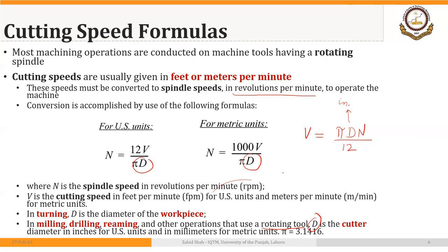The same formula applies for metric units, but the diameter of the workpiece or cutter is generally in millimeters, so we divide by 1000 to get the cutting speed in meters per minute. Conceptually, the formula is simply V = πDN, rearranged to solve for N so we can convert the recommended cutting speed into the spindle RPM we can set on the machine tool.